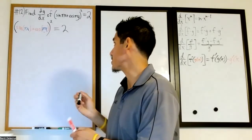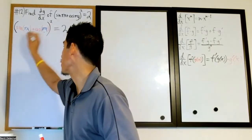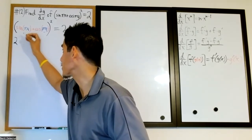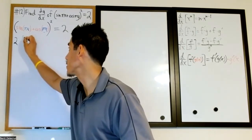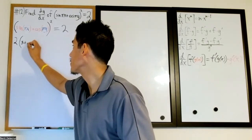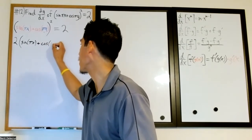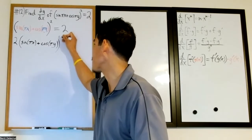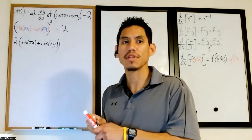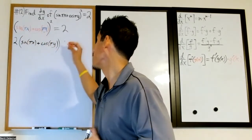When we differentiate, we first take the derivative of the outermost function — the power function. When something is written to the second power, we use the power as the coefficient, so we get two times the inside expression (sine of πx plus cosine of πy) to the first power. That then needs to be multiplied by the derivative of the inside function in red.